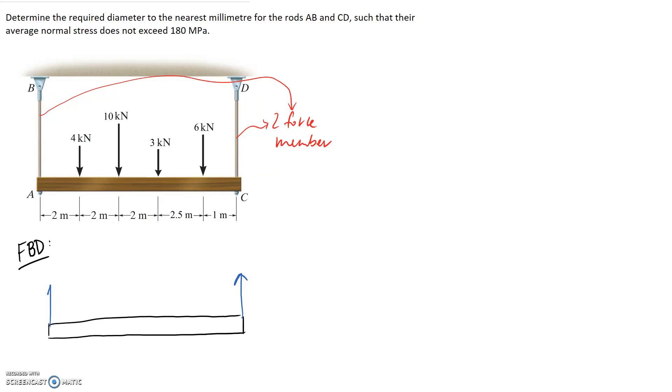I'm going to assume they go up. Let's call this one FCD and this one FAB. I'm assuming they go up because all these others are going down, so they counteract it. This one's 4, 10, 3, and 6 kilonewtons.